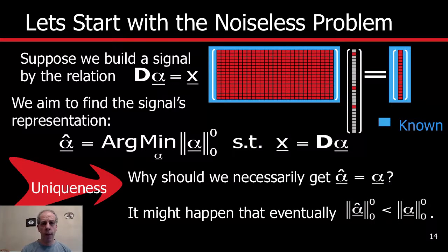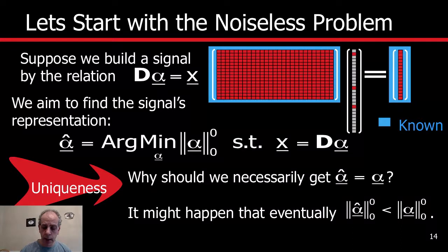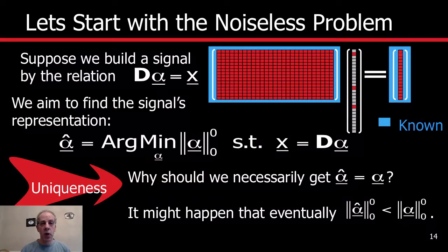One example where alpha is not unique: if several of the columns of D are identical, assume this signal was generated by one of those columns. I can actually pick any other identical column and replace alpha with the coefficient corresponding to that column. Assume columns one and two are identical — I generated the signal with the second column, but when reconstructing I can pick column one instead, and therefore I get a different alpha. That's an example where the solution is not unique.